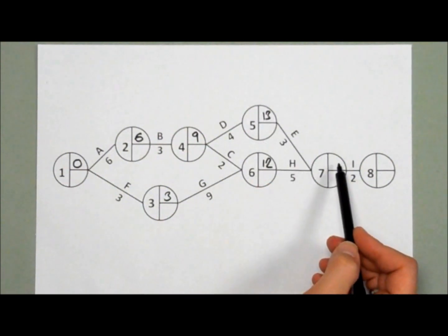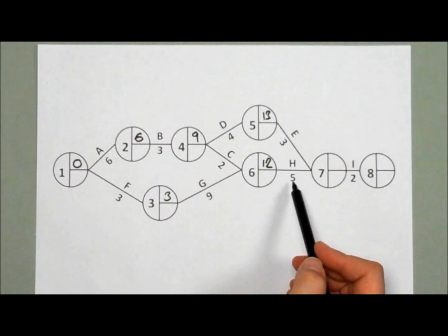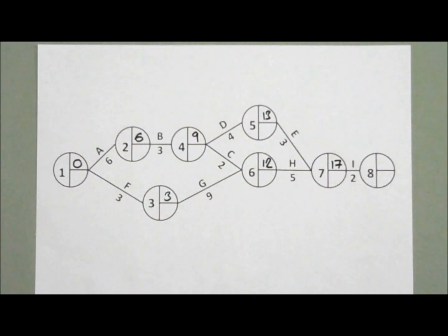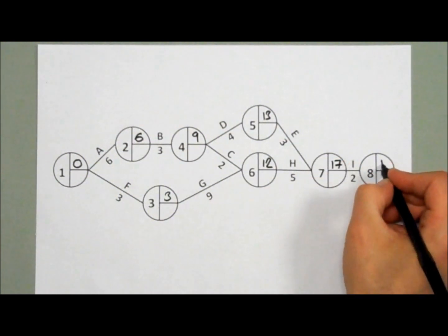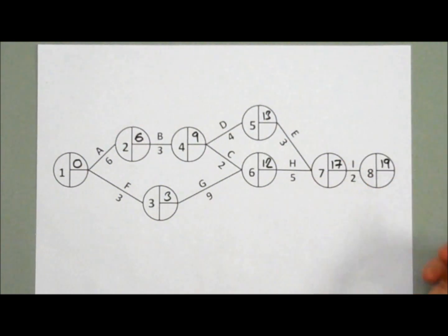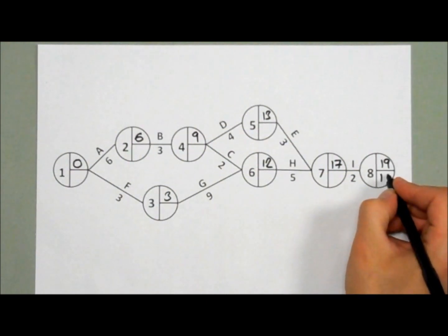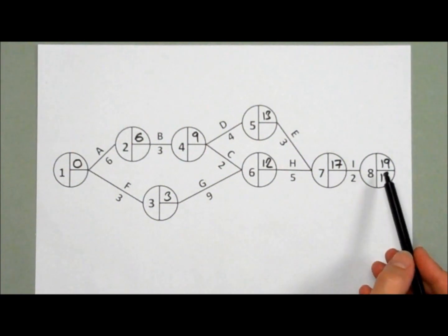13 plus 3 is 16, and 12 plus 5 is 17 - again that highest number - so 17 goes there. And 17 plus 2 gives us 19, so our complete project can be completed in 19 weeks. So in the interest of efficiency, this will be our latest finish time. Now we're going to work backwards - taking this lower quadrant, taking away the duration, which gives us the latest finish time of the previous activity, in this case H and E.